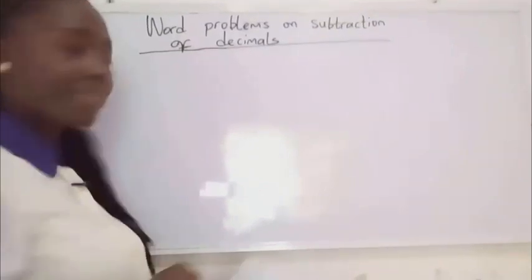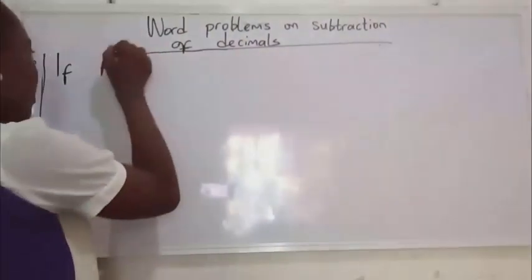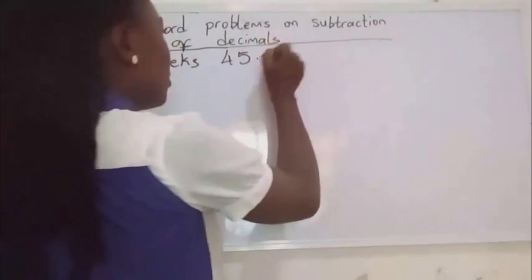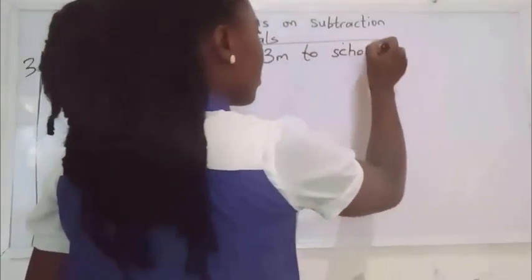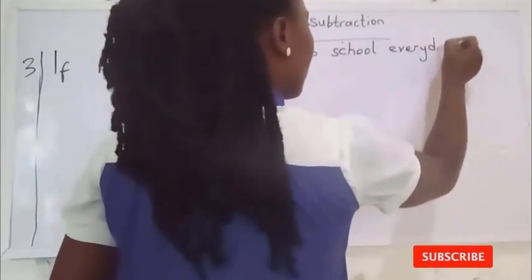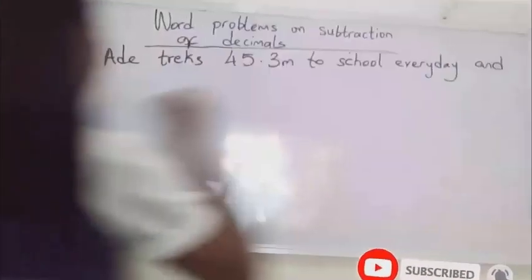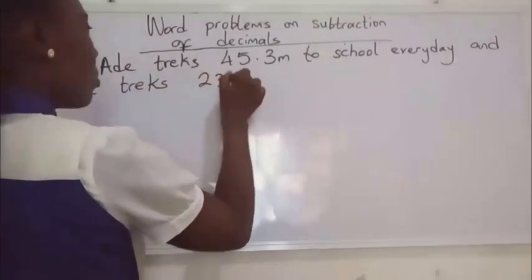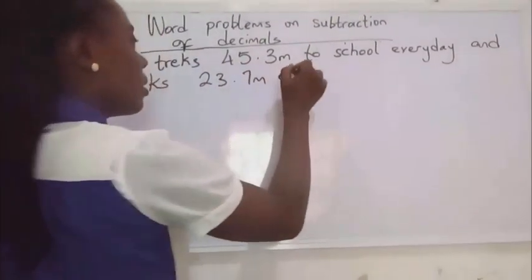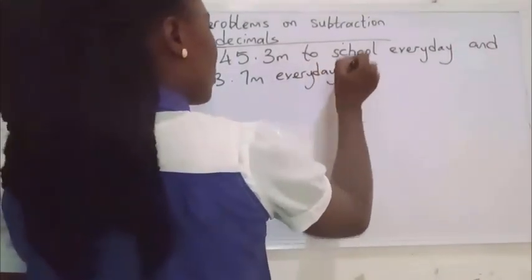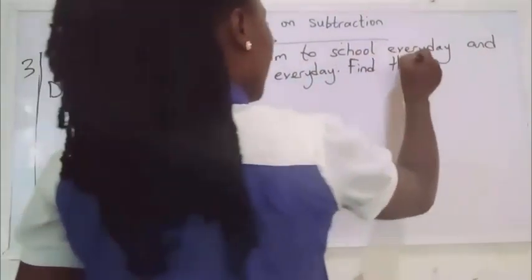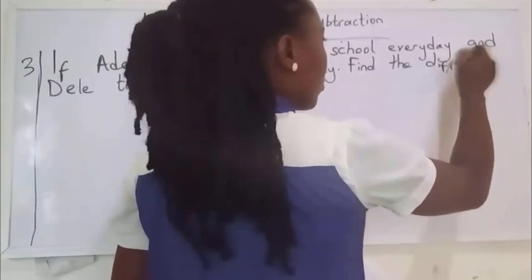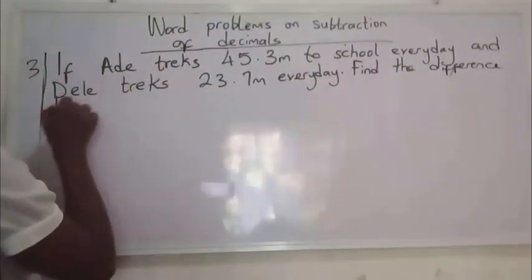Number three: if Ading treks 45.3 meters to school every day and Daily treks 23.7 meters every day, find the difference between both distances.